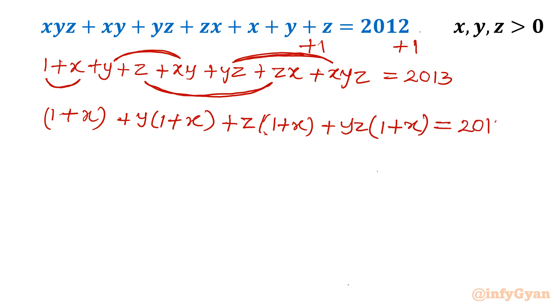Then I will be getting 1 plus x, 2013. Now 1 plus x is common in each term. I will take outside. So I will get 1 plus x outside. What is left? 1 plus y plus z plus yz equals 2013.